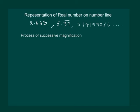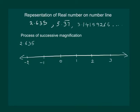We use a process of successive magnification to represent such numbers on the number line. Let us consider 2.635 and discuss the process of successive magnification. Consider this number line.